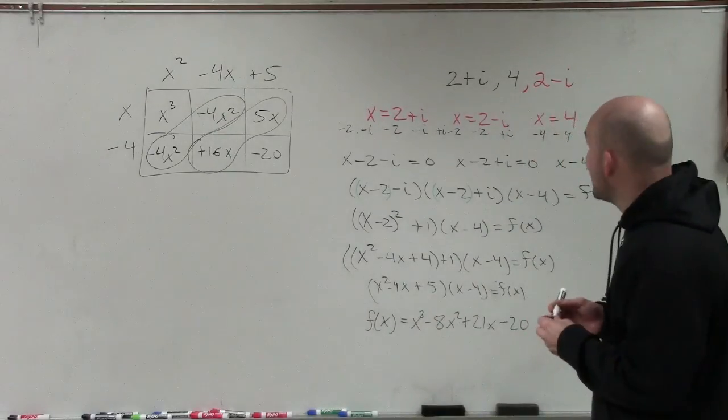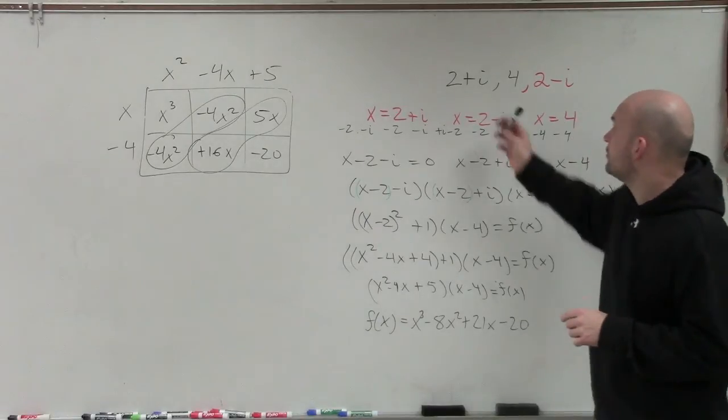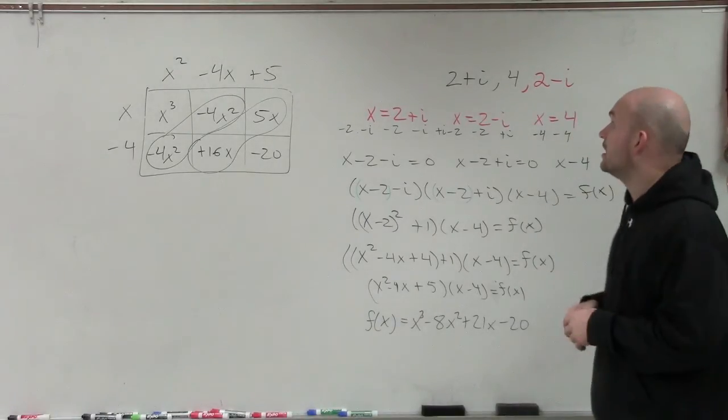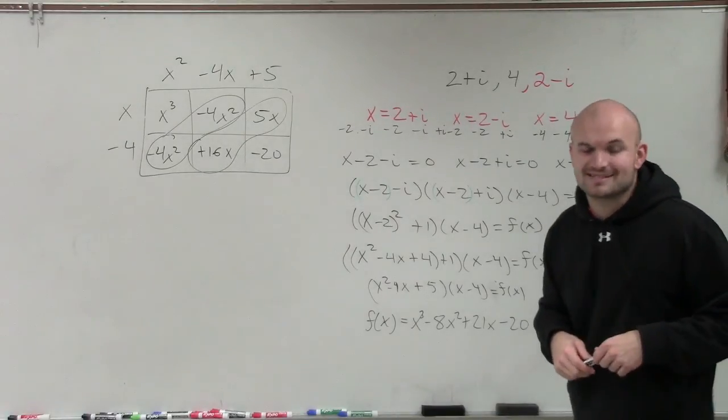So there you go, ladies and gentlemen. That is how you multiply. That's how you determine your polynomial when given a complex number as a zero as well as an integer. Thanks.